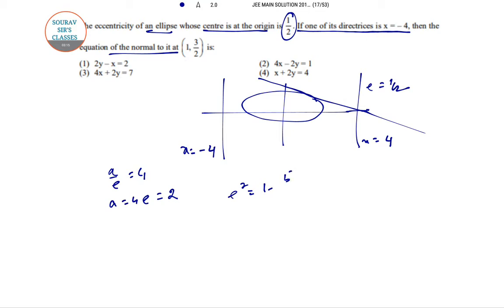e square we also know equals 1 minus b square by a square. So 1 by 4 equals 4 minus b square by 4. So b equals root 3. Therefore, x square by 4 plus y square by 3 equals 1 is the equation.